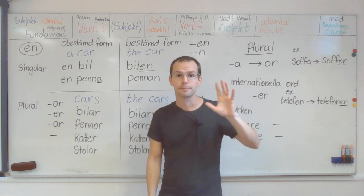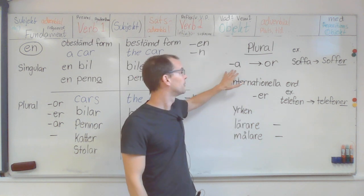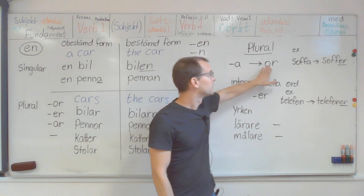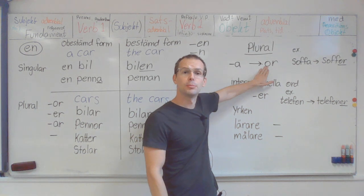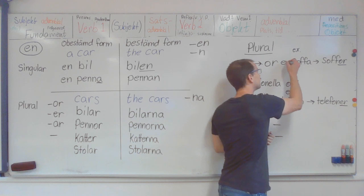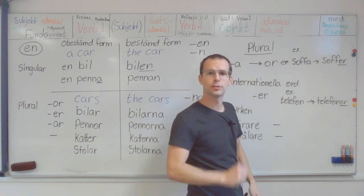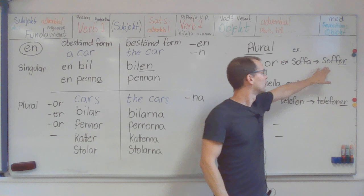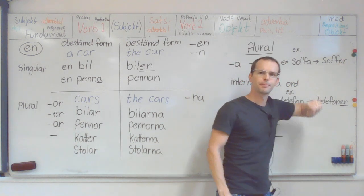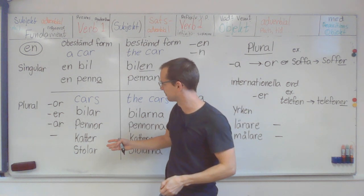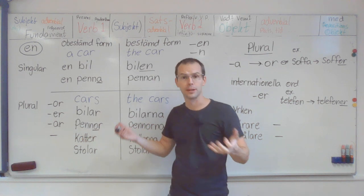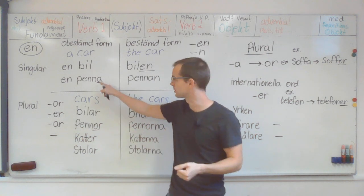For example, we can see here. If the word ends with an a, the suffix becomes or. For example, soffa. En soffa. And plural soffor. Or. And you see the same here. Penna. Pennor. So it ends with an a.